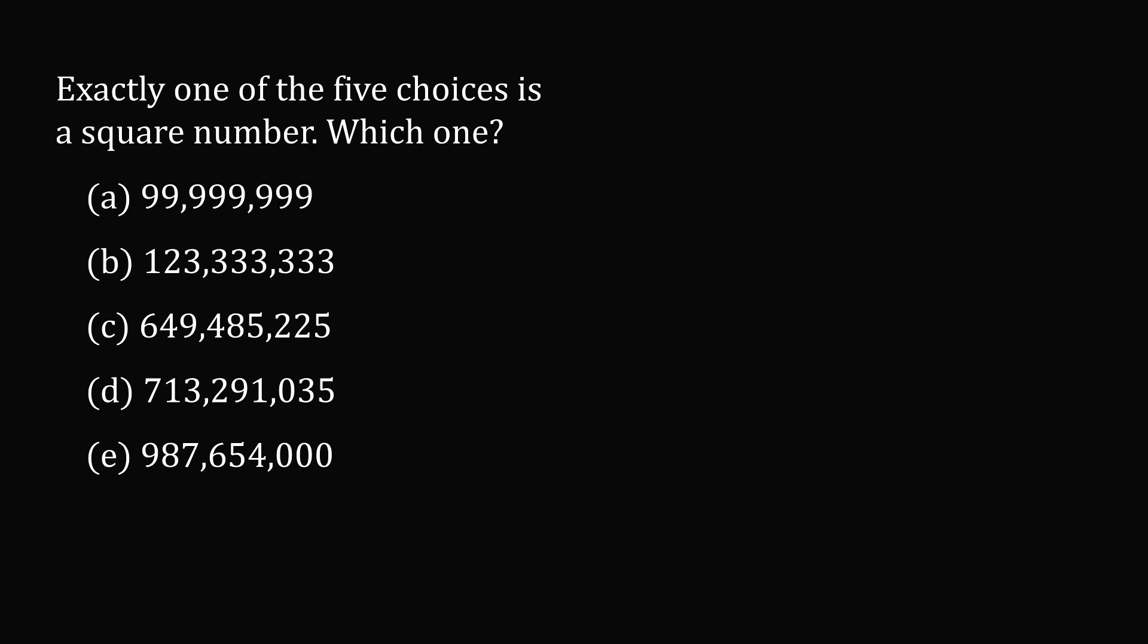Then we have $123,333,333. Option C, $649,485,225. Option D is $713,291,035. And option E is $987,645,000. So which choice is the perfect square?